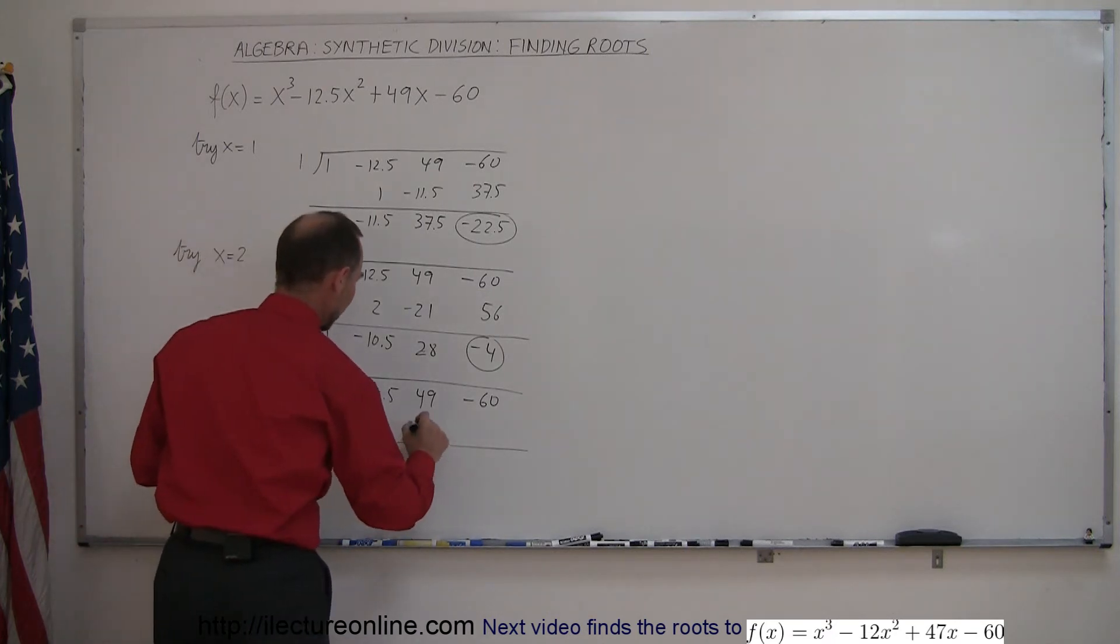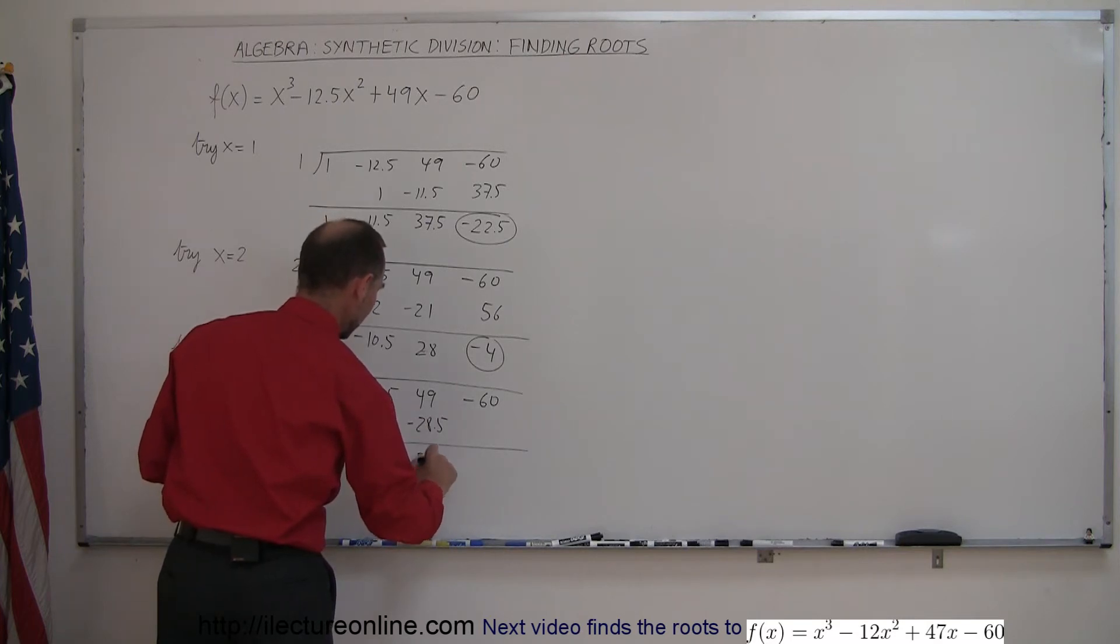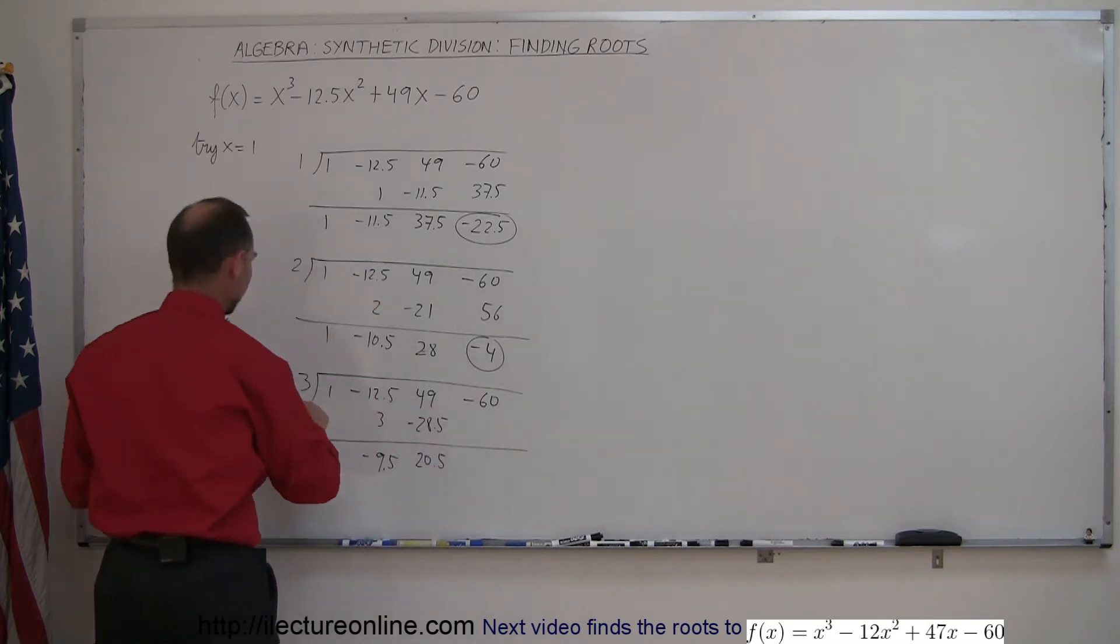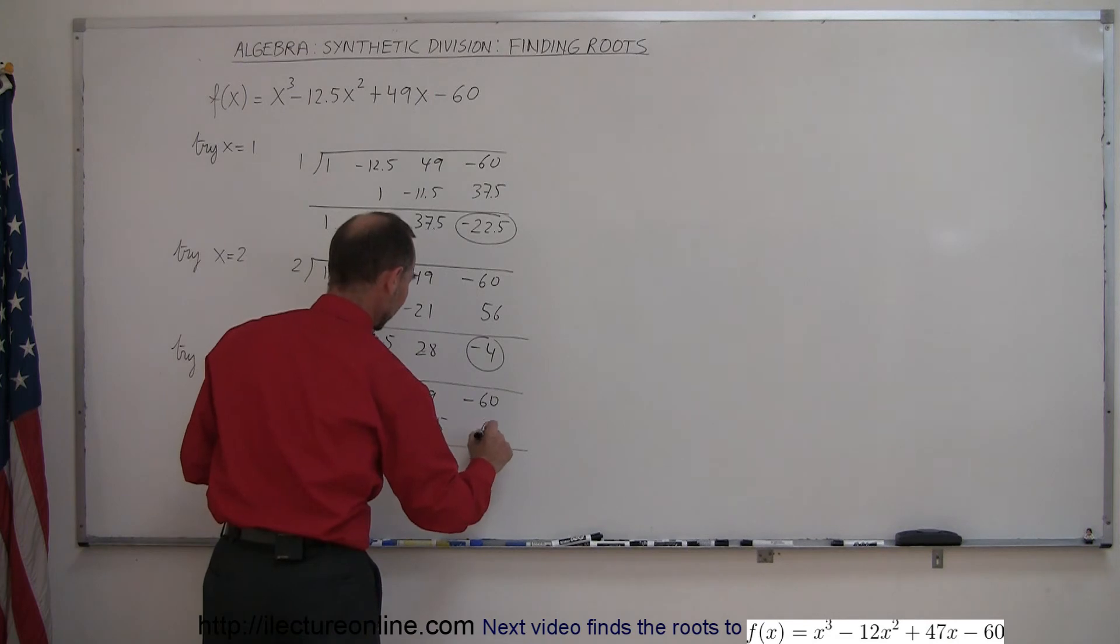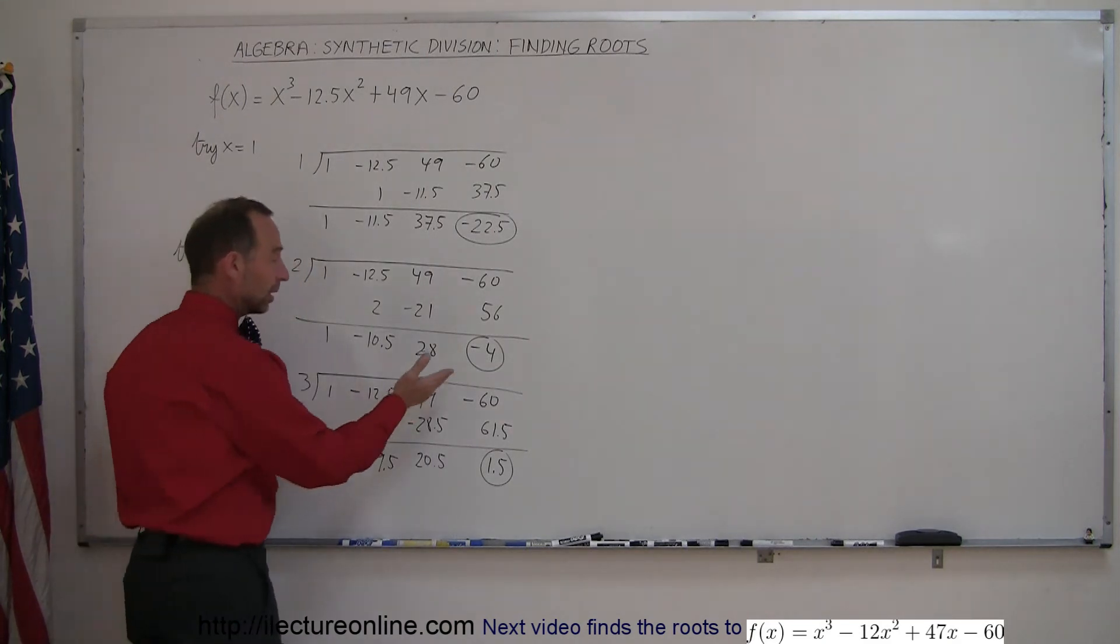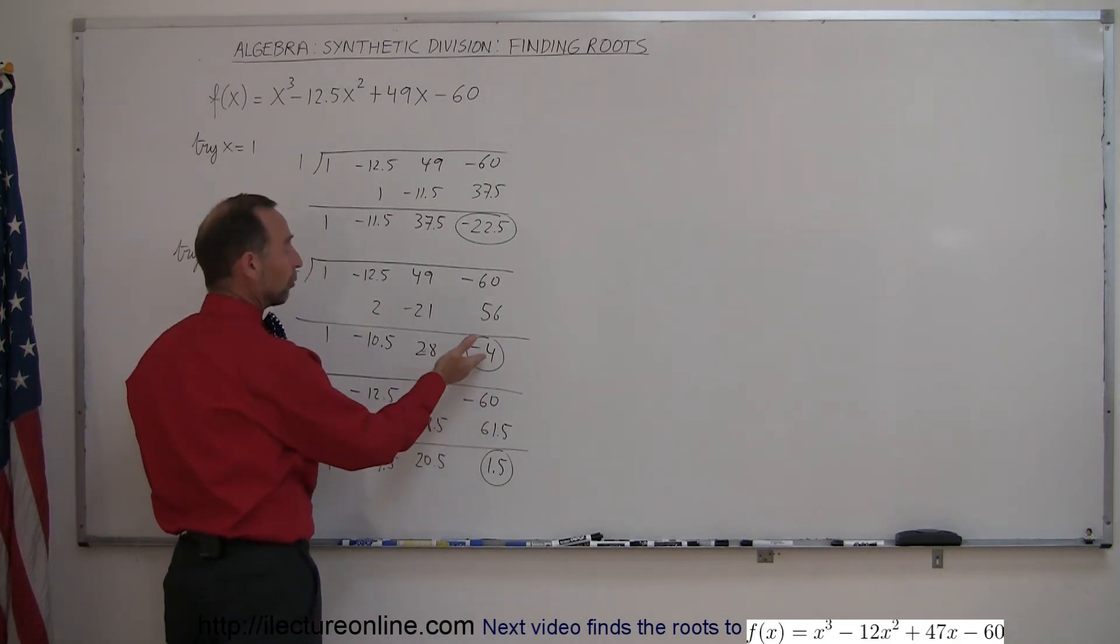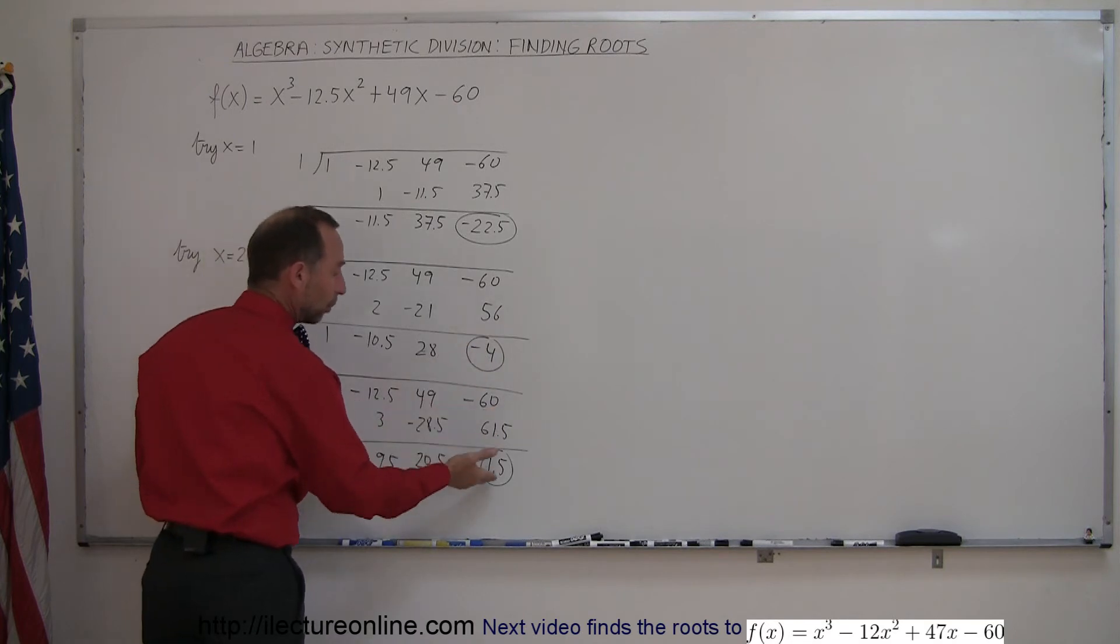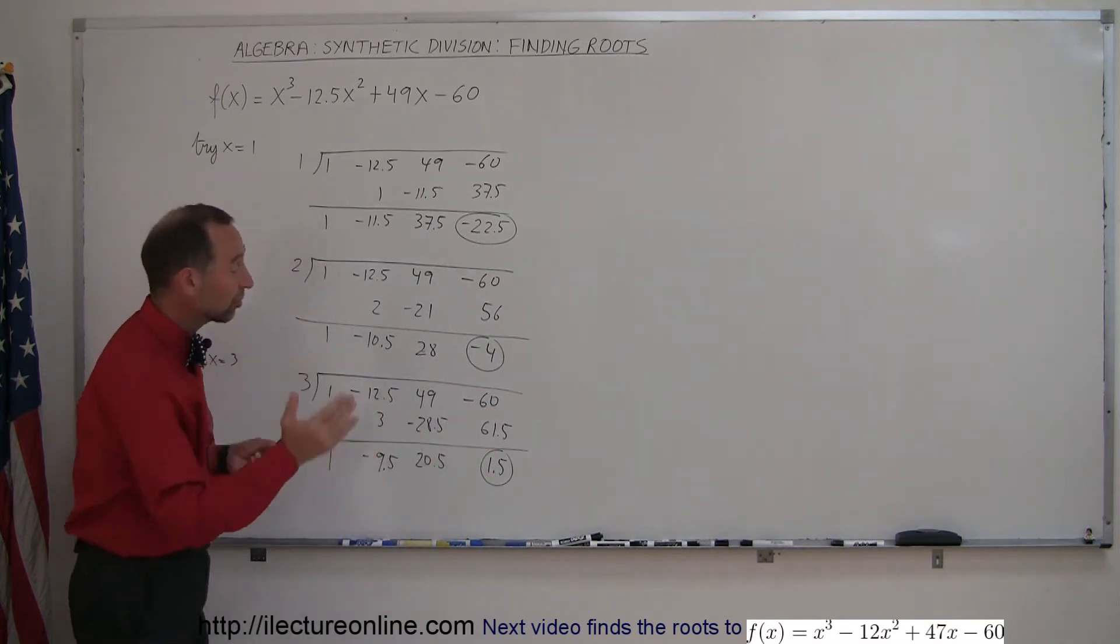Minus 9.5 times 3 is minus 28.5, the remainder is 20.5. 20.5 times 3 is 61.5, add them together you get positive 1.5. What happened here? We actually went a little bit too far. Minus 4 was not far enough, plus 1.5 is now on the other side of zero.